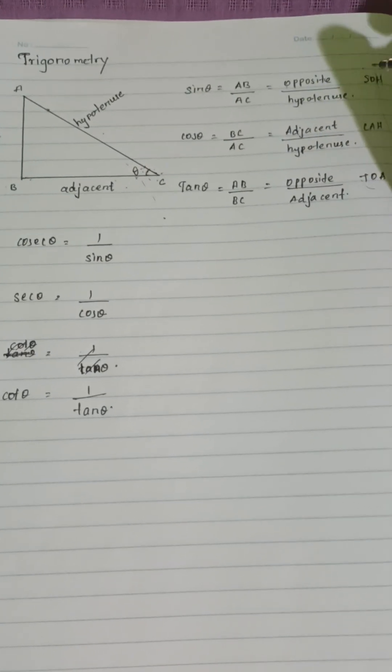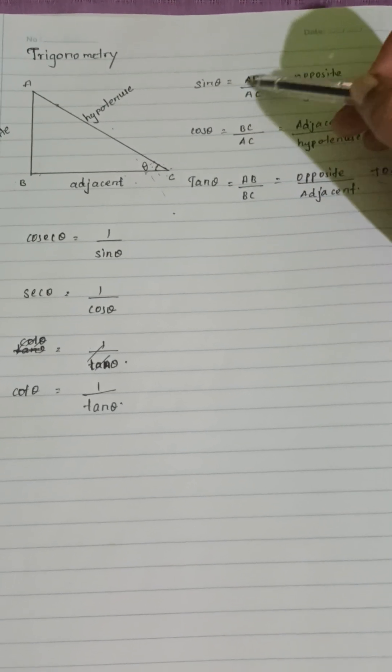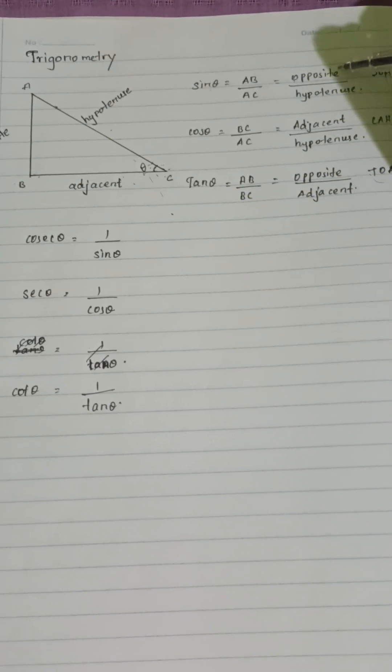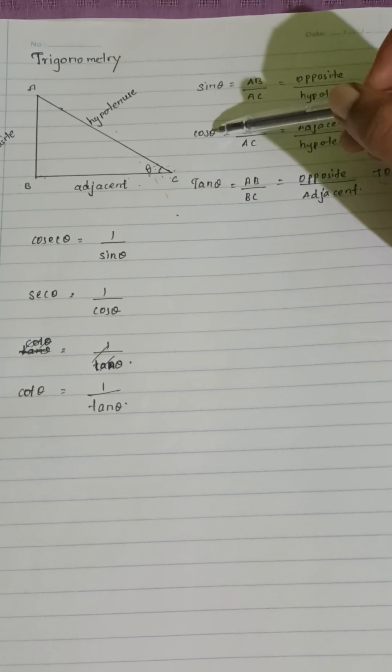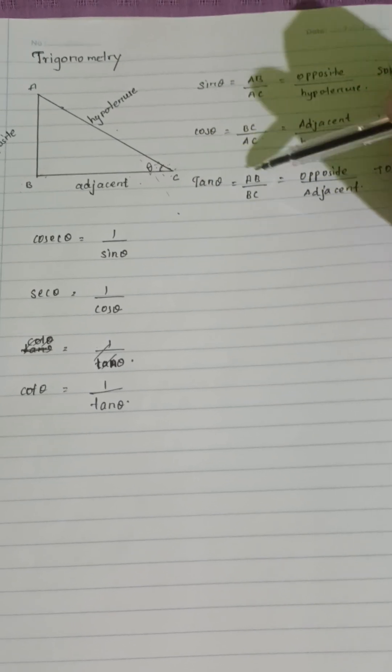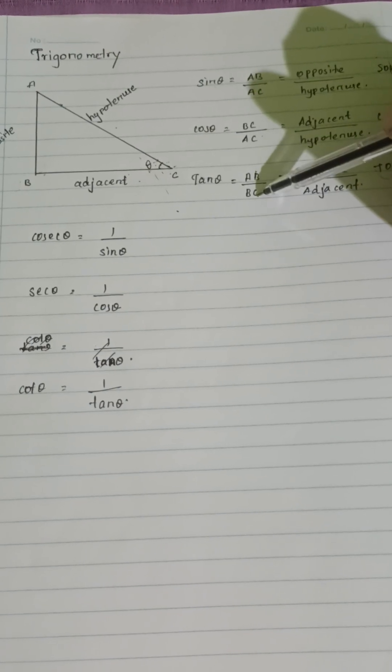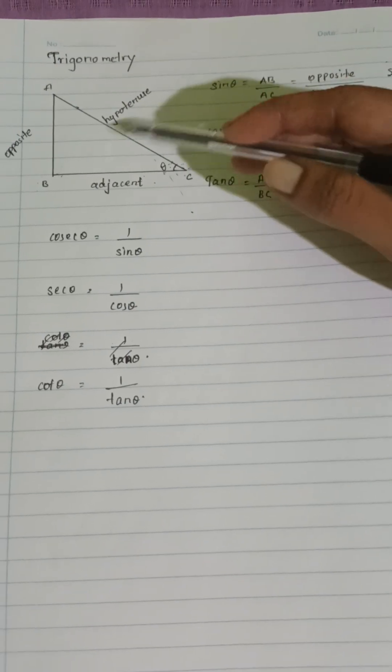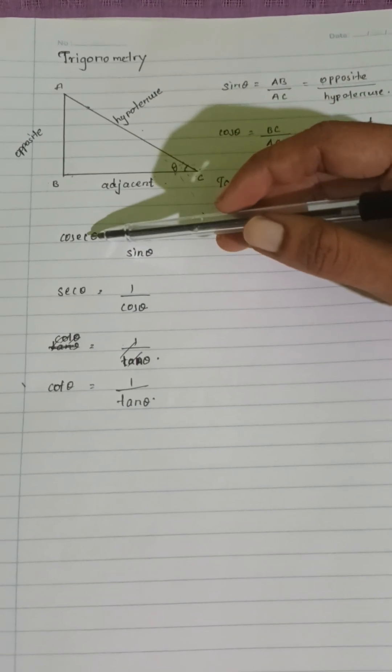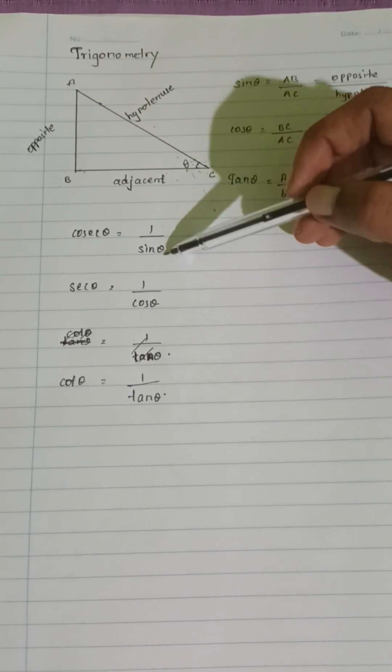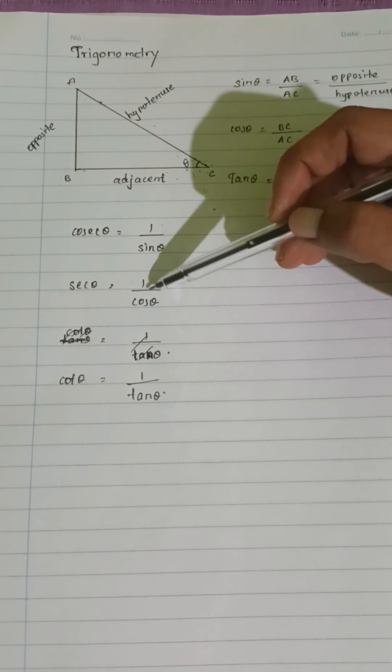Some of the ratios in trigonometric basics: sin theta equals AB over AC (opposite over hypotenuse), cos theta equals BC over AC (adjacent over hypotenuse), and tan theta equals AB over BC (opposite over adjacent). There are also some reciprocal functions.